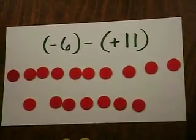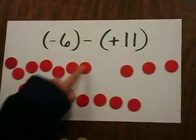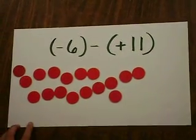And then, your answer is all of these left, which is 1, 2, 3, 4, 5, 6, 7, 8, 9, 10, 11, 12, 13, 14, 15, 16, 17 negative tiles, which is negative 17.